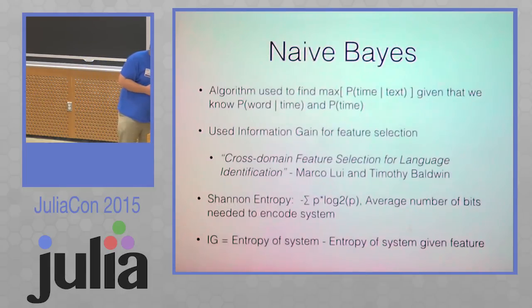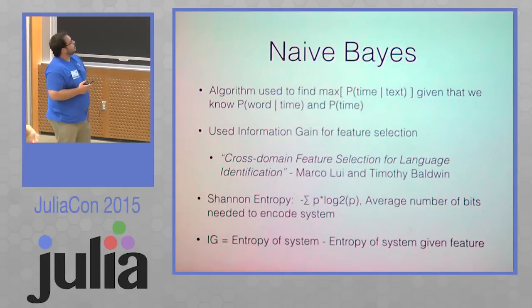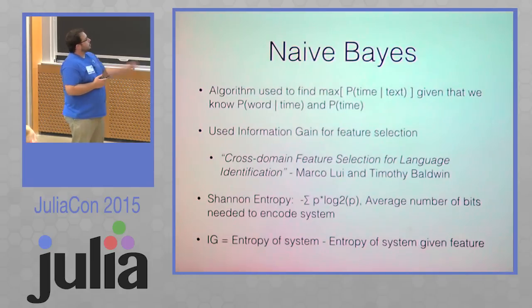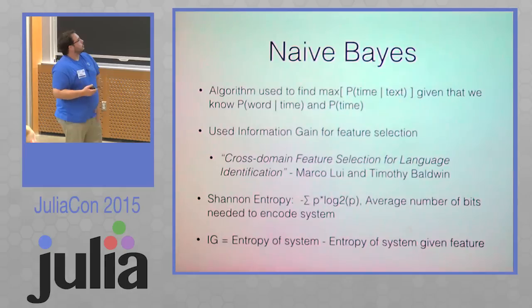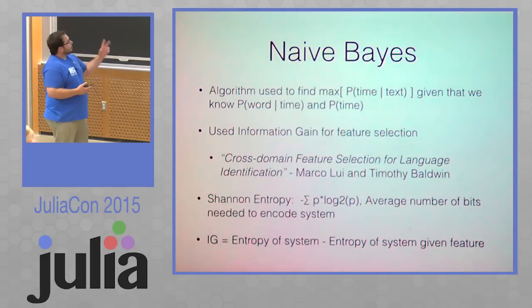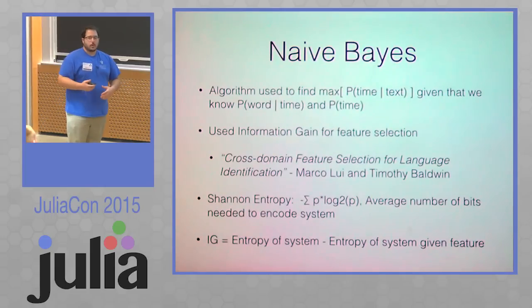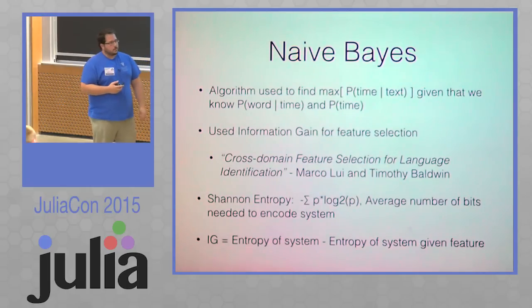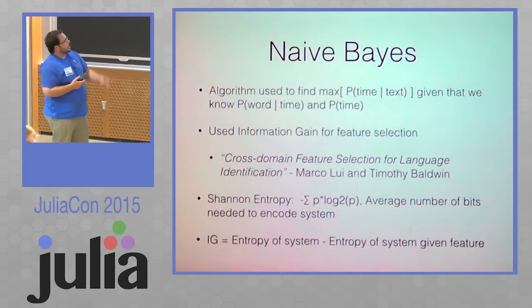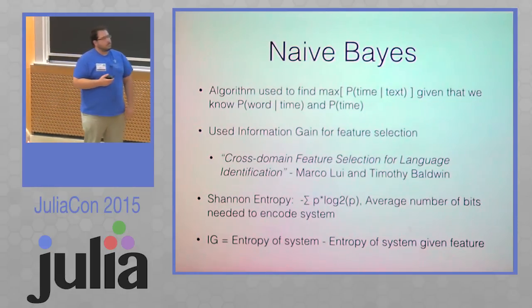So we moved on to a supervised learning technique: Naive Bayes. The simplest explanation is we wanted to find the max probability of time given a text. But what we start with is the probability of a word given time, and the probability of time. Using Bayes' law, you can turn that around. One of the notable things that we did, which a lot of people don't, is we used information gain instead of TF-IDF to do feature selection. We got our information gain from the work Cross-Domain Feature Selection, written by Marco Lu and Timothy Baldwin in 2011.